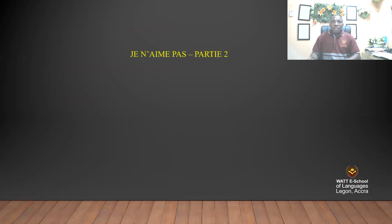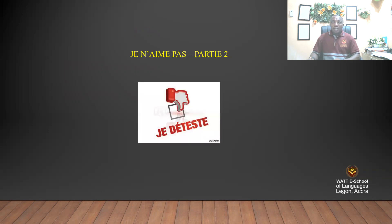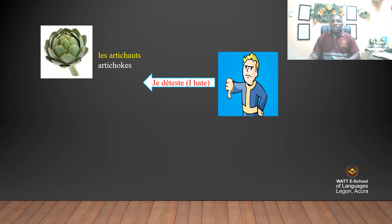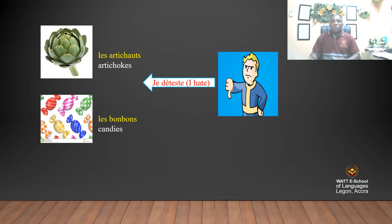Je n'aime pas — I don't like — Part Two. Je déteste means 'I hate.' Je déteste les artichauts — I hate artichokes. Je déteste les bonbons — I hate candies. So if you hate something, you say je déteste and add the item.